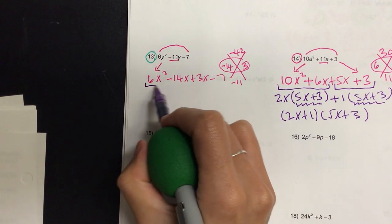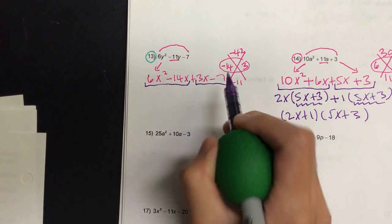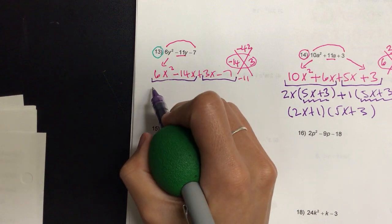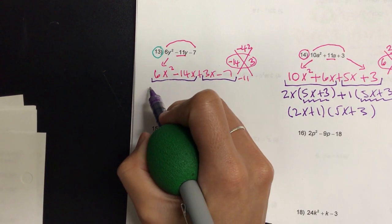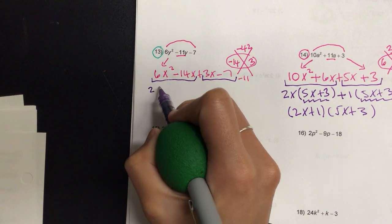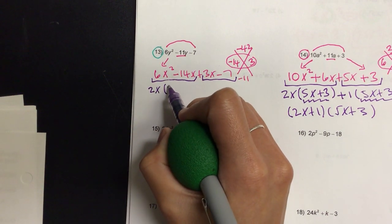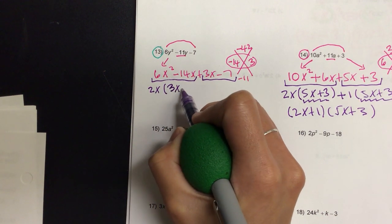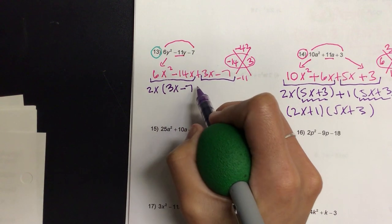And then we have minus 7. And then let's do our grouping. What is our GCF from the first group? X. The X is correct? 2X. 2X. Is that the biggest? Yeah. Okay, 2X. So it gives me 3X minus what? 7.